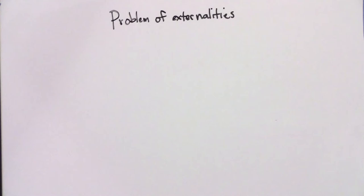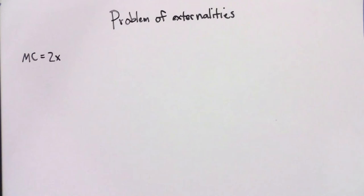Assume that your neighbor heats his home with a wood-burning stove, and the smoke from the stove bothers you. It would cost your neighbor something to pollute less. Specifically, the cost of pollution reduction is given by the following equation: MC equals 2X, where X is the amount of pollution reduction in pounds per year, and MC is the marginal cost to him in dollars. The marginal cost of pollution reduction is increasing — it costs your neighbor just $2 to reduce pollution by one pound.